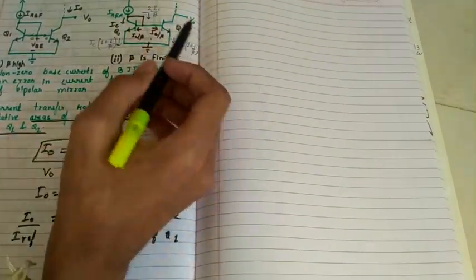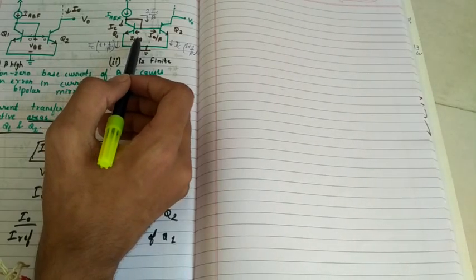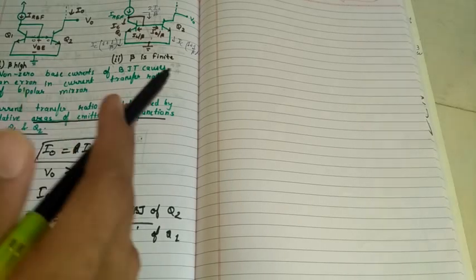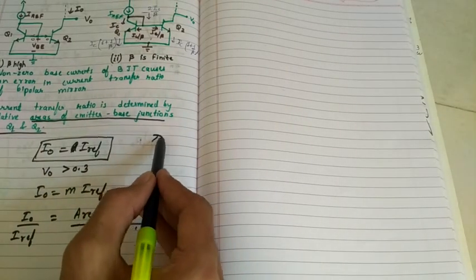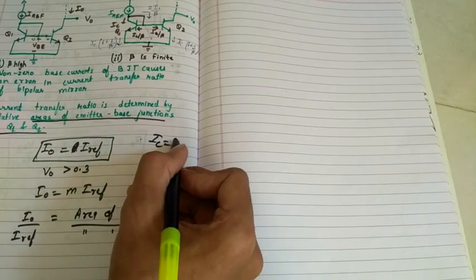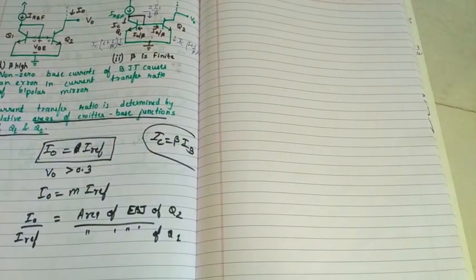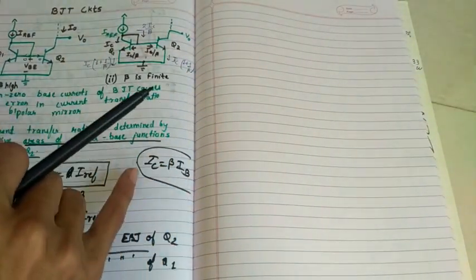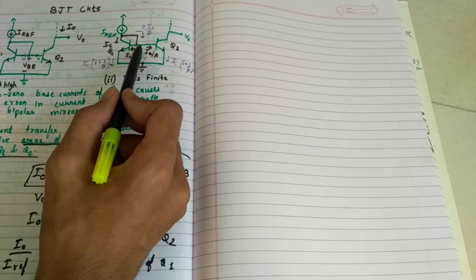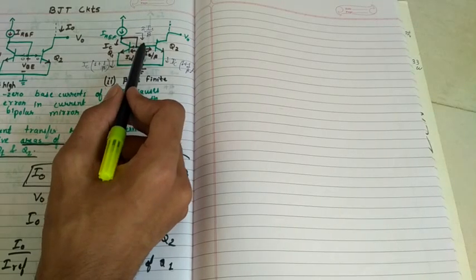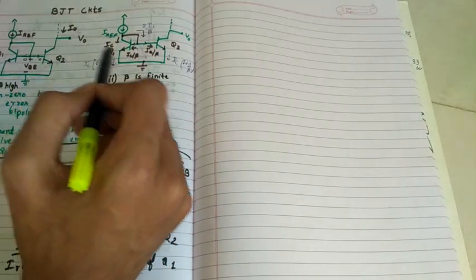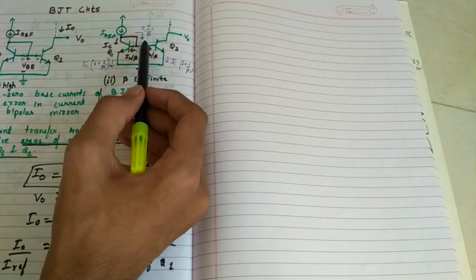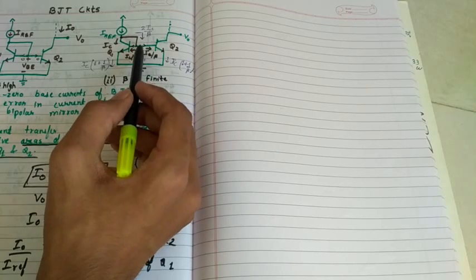Obviously when beta is finite, IC equals beta times IB because our assumption is that both transistors are in active mode, and in active mode only this equation is valid. So IB is IC by beta. IC by beta current will flow through the base of Q1 and Q2. As per Kirchhoff's current law, we have twice IC by beta.